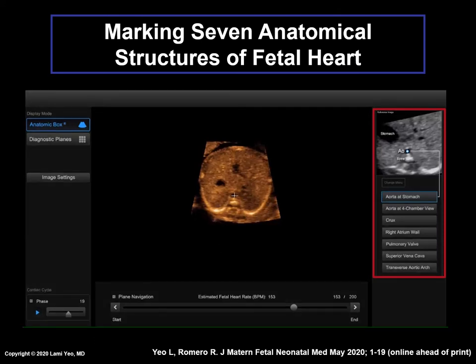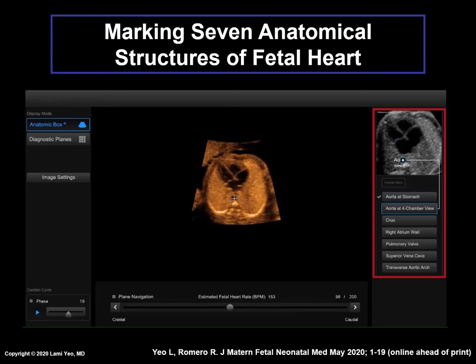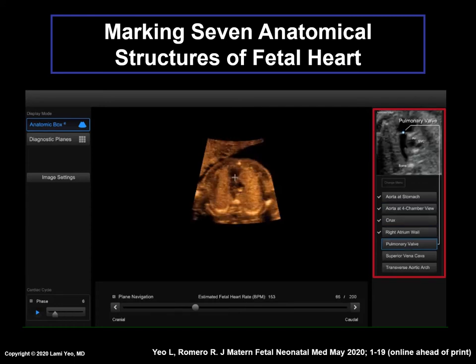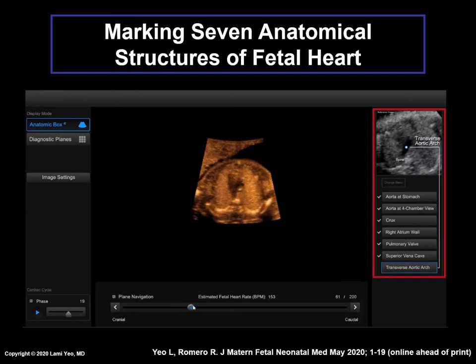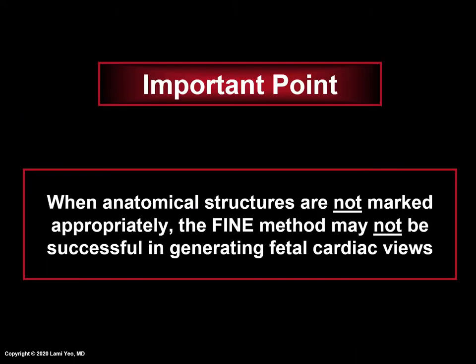First, the aorta at the level of the stomach is marked. Next, the aorta at the four-chamber view, the crux, right atrial wall, pulmonary valve, superior vena cava, and the transverse aortic arch. An important point is that when anatomical structures are not marked appropriately, the FINE method may not be successful in generating fetal cardiac views.